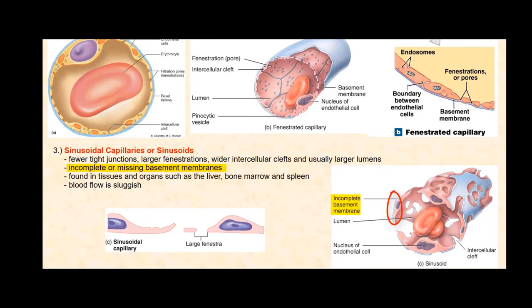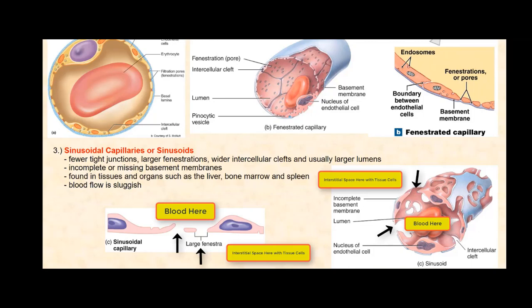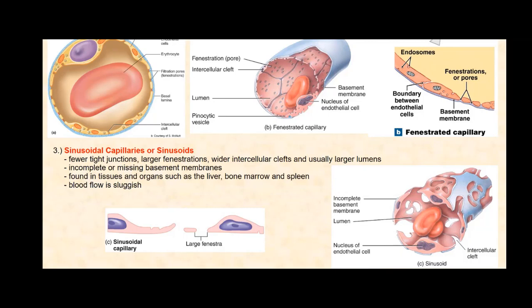Sinusoidal capillaries are found in tissues and organs that produce and secrete very large substances, such as blood cells and large proteins — these products must have the ability to enter the circulatory system by entering through these sinusoids. In tissues and organs that interact with these large substances, they too would have sinusoidal capillaries, so these products can leave the circulatory system to interact with the tissue cells. For example, the red bone marrow produces cells found in blood, such as red blood cells, so the red bone marrow contains sinusoidal capillaries.